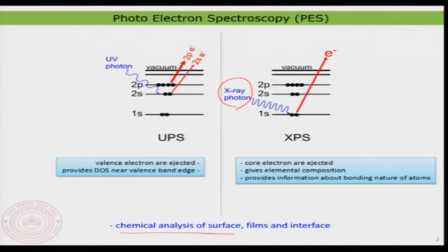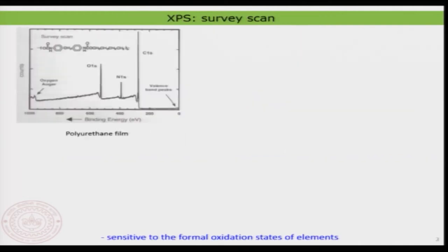The important thing is that the core levels are quite sensitive to the chemical environment of a given element. So if you are looking at the core level binding energy of a given element, it is quite strongly dependent on the chemical environment of that molecule. That means we can formally understand the oxidation state of the element itself.